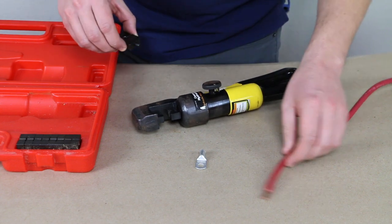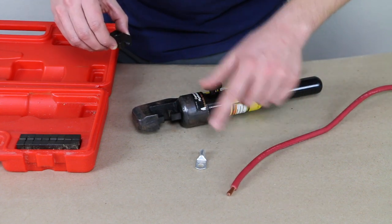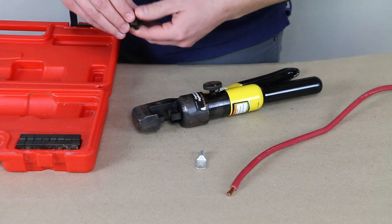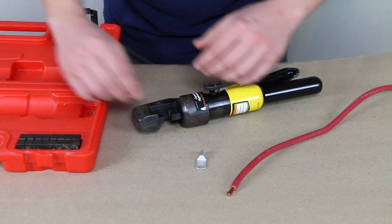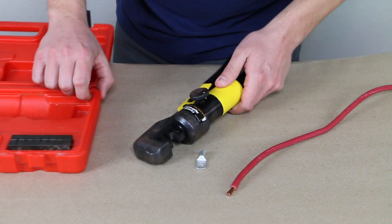You can kind of eyeball which size is going to work. Or if you're going to do a whole lot of cables of the same gauge, you can try different dies. You can find the dies that work and then make all your cables. So it's not the end of the world, but as I said, strike one.